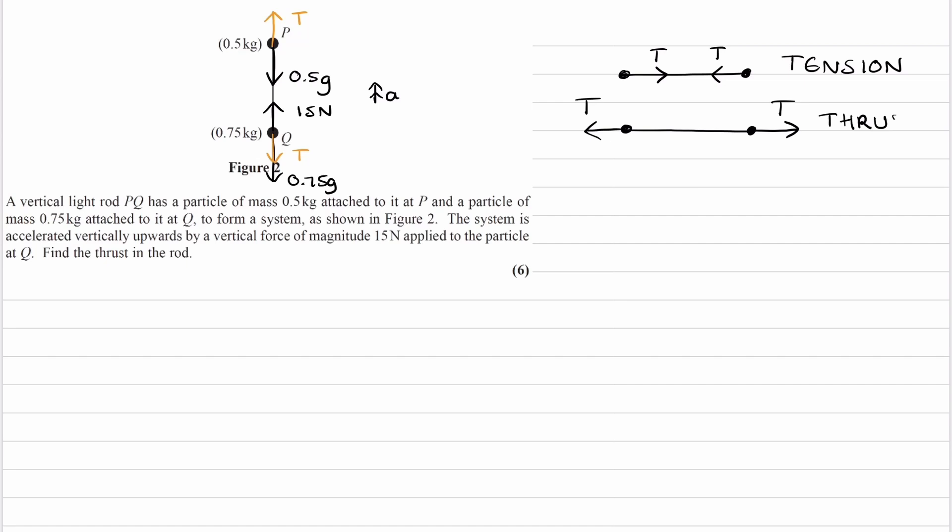They're usually given the same symbol T, but they can mean different things depending on whether you have a compressive or tensile force. A tensile force means a pulling force. When you have a tensile force, there will be tension—that's when you're pulling something apart. When you have a compressive force, pushing something together, you will have a thrust force.